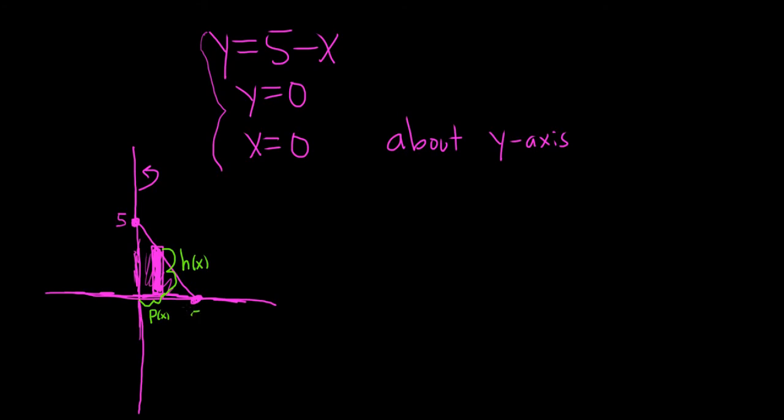p of x is the distance from the skinny part of the rectangle to the axis of revolution. So because we're integrating with respect to x, p of x is just going to be x. It's going to vary, right? Depending on where you draw the triangle, it's a distance of x.